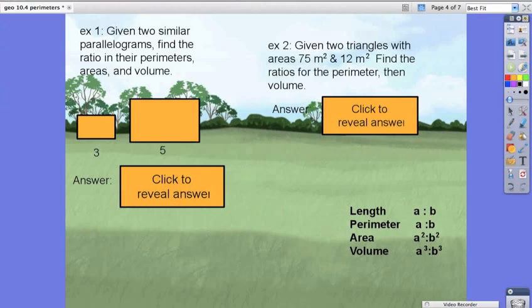Now, example one says, given two similar parallelograms, find the ratio in their perimeters, area, and volume. So if the ratio of their size in these two similar figures is 3 to 5,